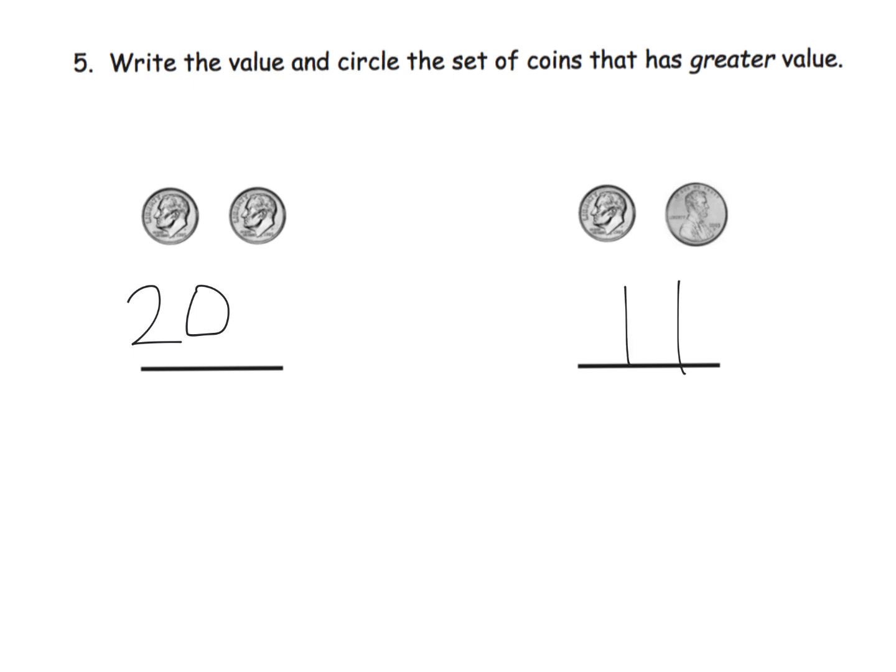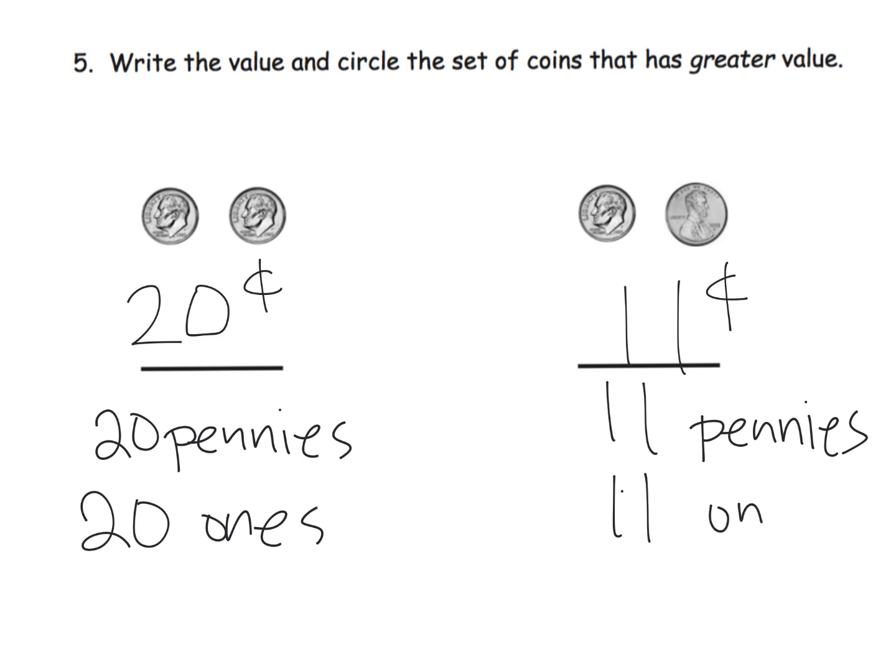So the idea would be another representation of this 20 cents. We could say it's 20 pennies, or in an early lesson, we would have called this 20 ones. Meanwhile, over here, this is 11 pennies, or we might think of this as 11 ones. And since we have common units, 20 is greater than 11. So the idea is, which one's greater? And we're going to say this is greater.